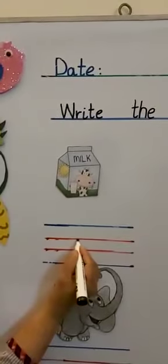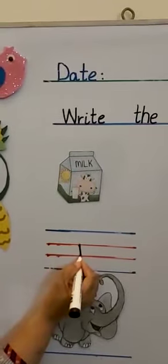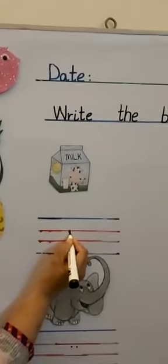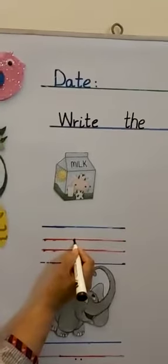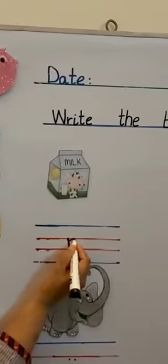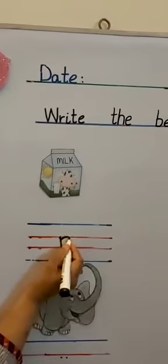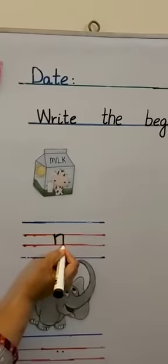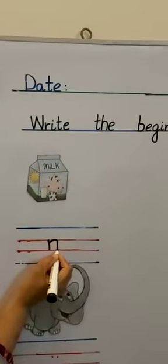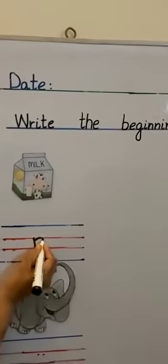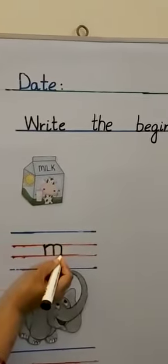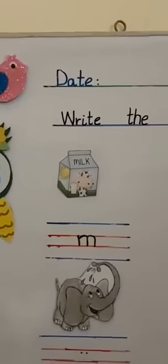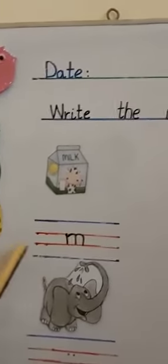M comes in the middle two lines. Put your pencil on the dot. Make a straight line, go up on the same line. Don't touch the dot. Make a curve and come down. Touch line number three. Go up on the same line. Make a curve and come down, and stop at line number three. This is letter M.